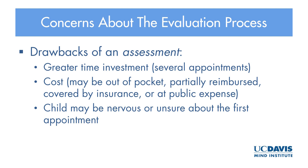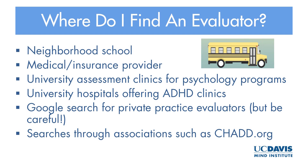How do you find an evaluator? Your schools can often recommend somebody. Your medical or insurance provider typically has a list of people who can provide this sort of evaluation. University assessment clinics for psychology programs and university hospitals with training in psychiatry have clinics for general child psychiatry as well as specialized ADHD clinics. You can also Google search for private practice evaluators, but be careful as some may not meet the criteria. CHADD is also a support organization with a list of names typically in your local area — seek out their website for recommendations for psychologists, psychiatrists, or others with expertise in evaluating ADHD.